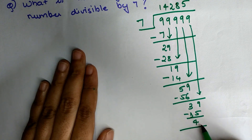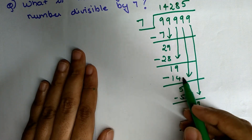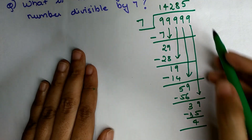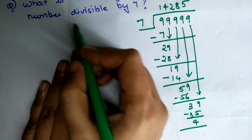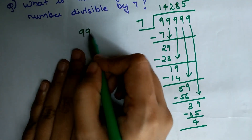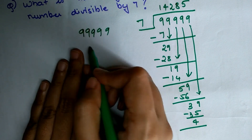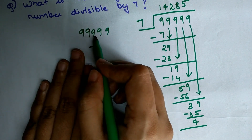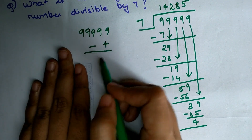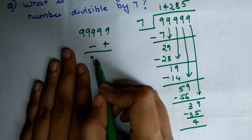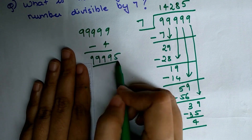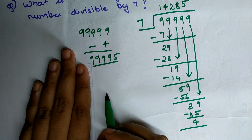Whatever remainder you get after dividing, you simply subtract it from the dividend. So we subtract four from 99999, and the answer is nothing but 99995.